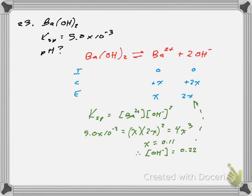Well, now I just apply the same rules for POH that I did PH. I do negative log of the concentration. That gives me a POH of 0.66. And of course, POH and PH add to 14. And so I just subtracted from 14 to get the PH. And I have 13.33.